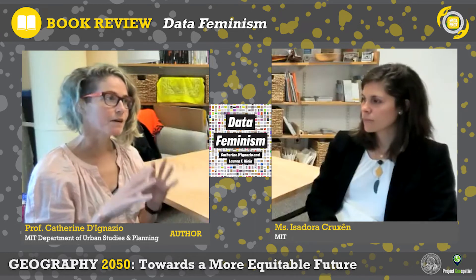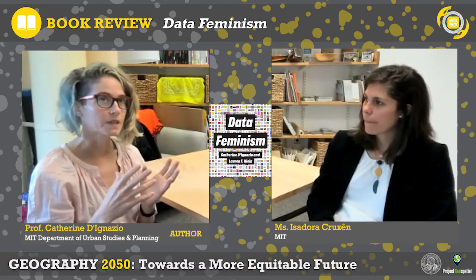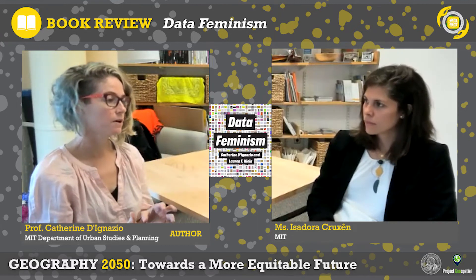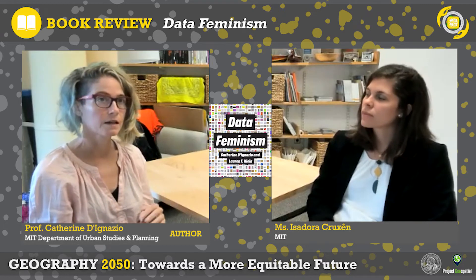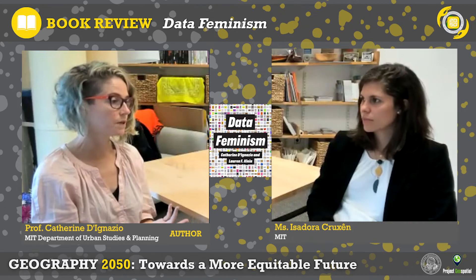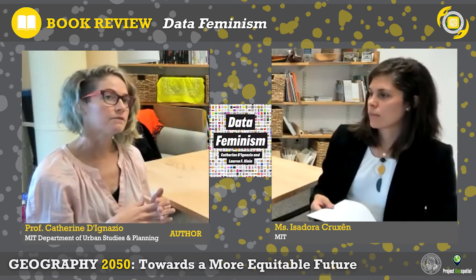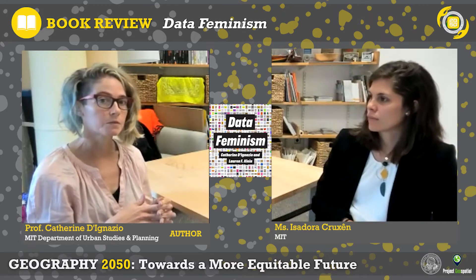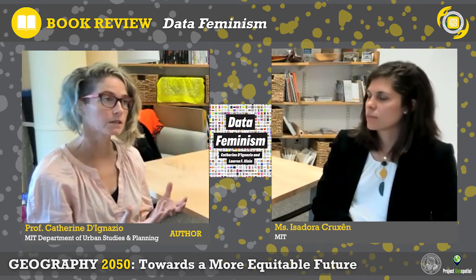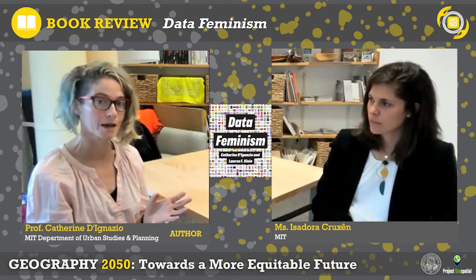We wrote the book more broadly about data science, but there are very important ways that these discourses of data science, AI, and so on definitely apply to geospatial data. In a sense, we almost need to be more careful when talking about geospatial data and geospatial data science, because of the ways in which location information can be so sensitive and potentially expose people to harm depending on who's looking at where people are. There are connections along the lines of geospatial data to all of our main concepts — thinking through the power dynamics of who produces the data, who produces geospatial data in particular, who has access to do something meaningful with it, who can make maps.